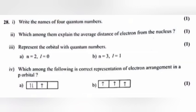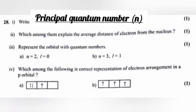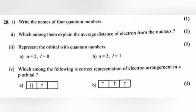Question 28: 1. Write the names of four quantum numbers. Answer: Principal quantum number, azimuthal quantum number, magnetic quantum number, and spin quantum number. 2. Which among them explain the average distance of electron from the nucleus? Answer: Principal quantum number. 3. Represent the orbital with quantum numbers. Answer: a. 2s, b. 3p. 4. Which among the following is correct representation of electron arrangement in a p orbital? Answer: b.